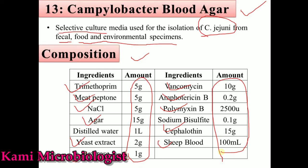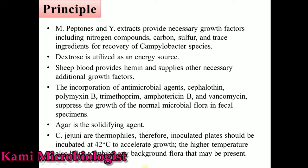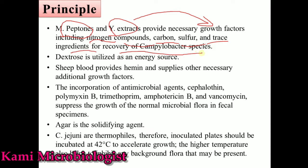Now let's discuss the function of these ingredients. First, meat peptone and yeast extract provide the necessary growth factors because they include nitrogen compounds, carbon, sulfur, and trace ingredients for the growth of Campylobacter species. This medium also contains dextrose, which is the energy source used by Campylobacter for division and growth. Sheep blood is added after autoclaving and provides hemin, another necessary growth factor.